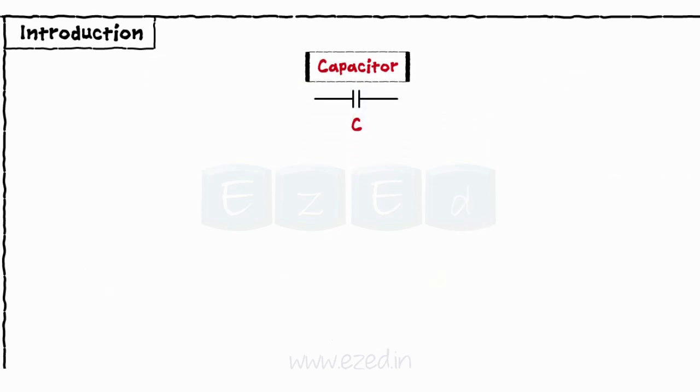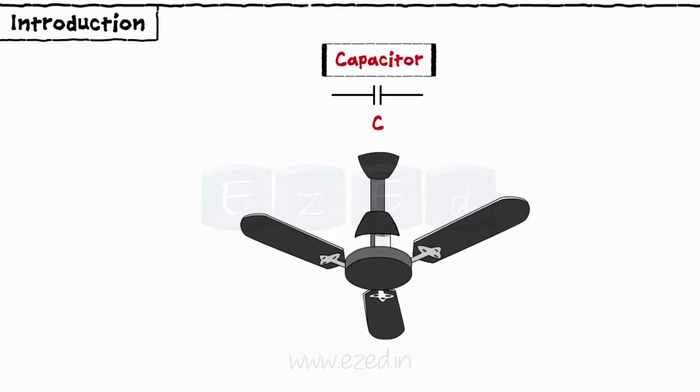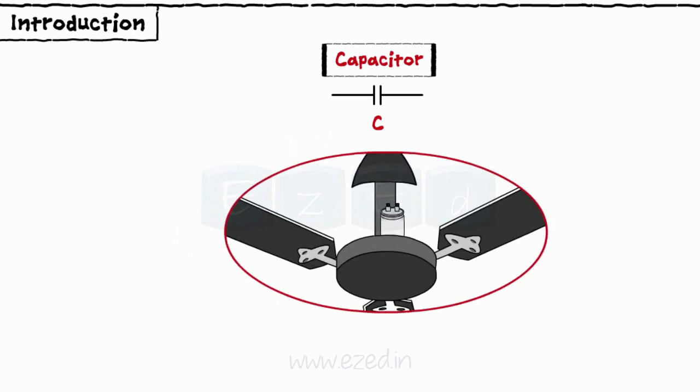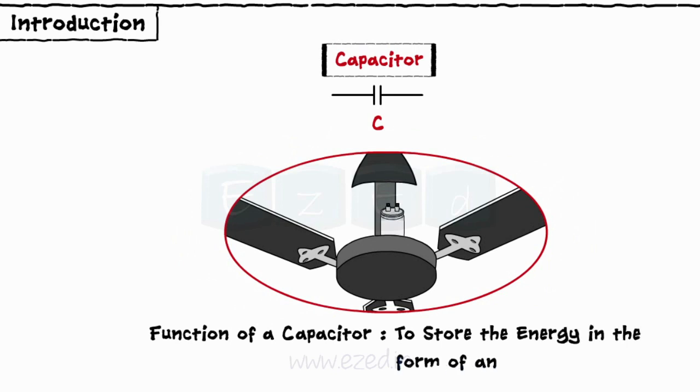The best example of the use of a capacitor is the ceiling fan. If we remove its lower cap, we see a big white cylinder which is nothing but a capacitor. Primary function of a capacitor is to store the energy in the form of an electric field.